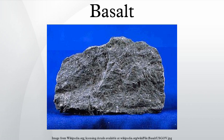Alkali basalts typically have mineral assemblages that lack orthopyroxene but contain olivine. Feldspar phenocrysts typically are labradorite to andesine in composition. Augite is rich in titanium compared to augite in tholeiitic basalt. Minerals such as alkali feldspar, leucite, nepheline, sodalite, phlogopite mica, and apatite may be present in the groundmass.